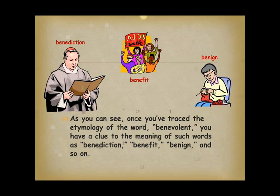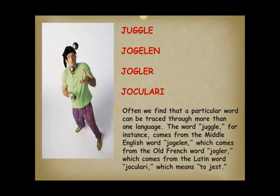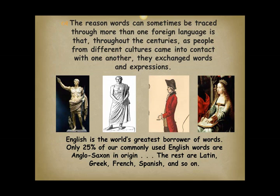Often we find that a particular word can be traced through more than one language. The word juggle, for instance, comes from the Middle English word joggelen, which comes from the Old French word juggler, which comes from the Latin word joculari, meaning to jest. The reason words can sometimes be traced through more than one foreign language is that throughout the centuries, as people from different cultures came into contact with one another, they exchanged words and expressions. English is the world's greatest borrower of words. Only 25% of our commonly used English words are Anglo-Saxon in origin; the rest are Latin, Greek, French, Spanish, and so on.